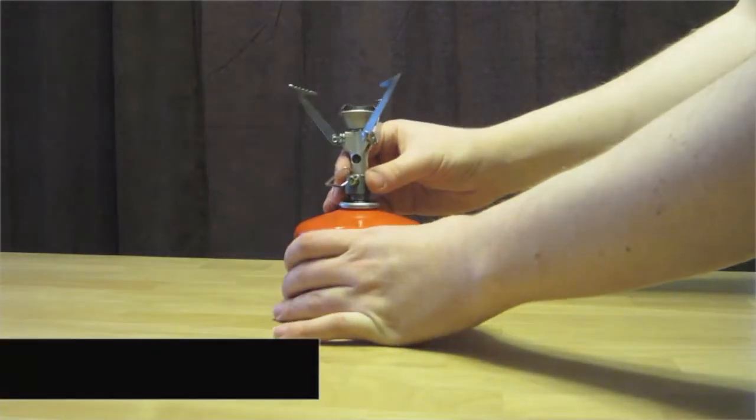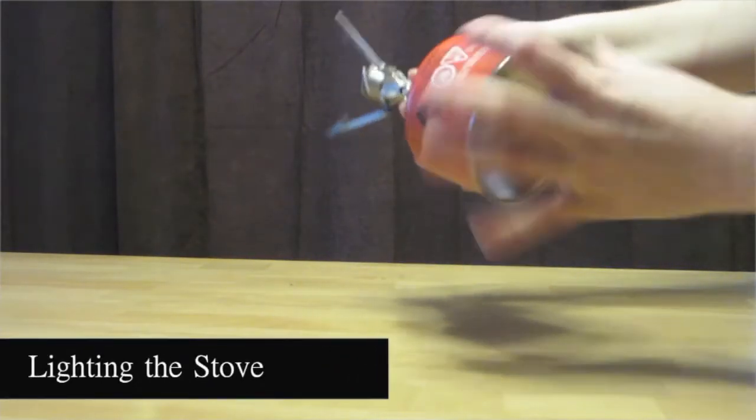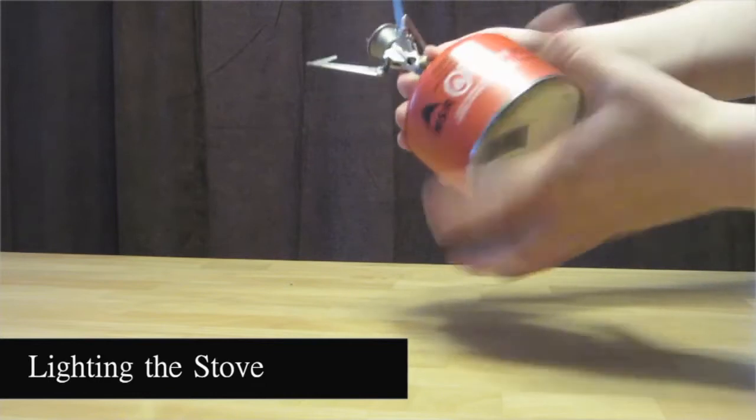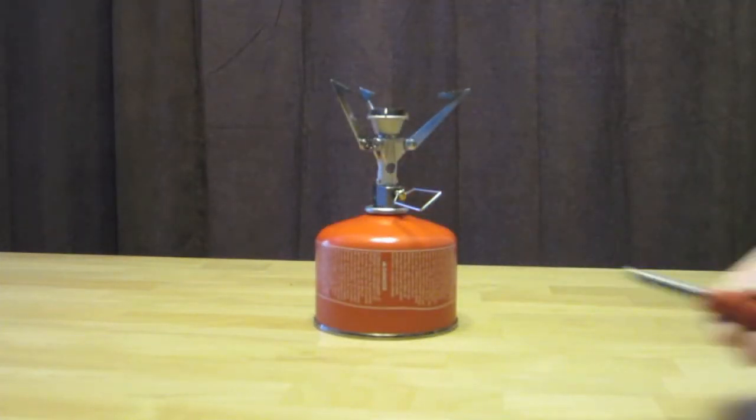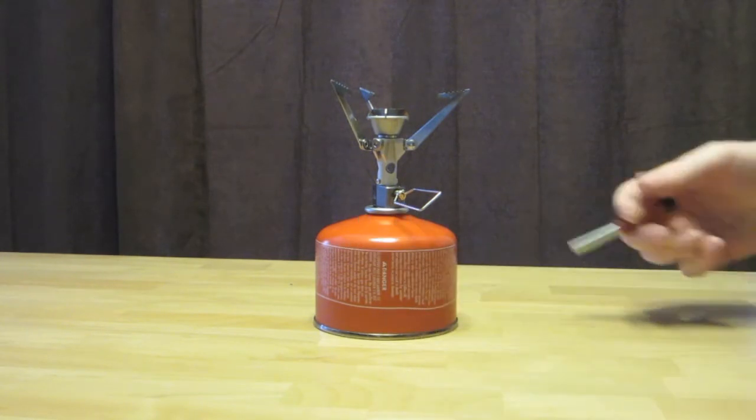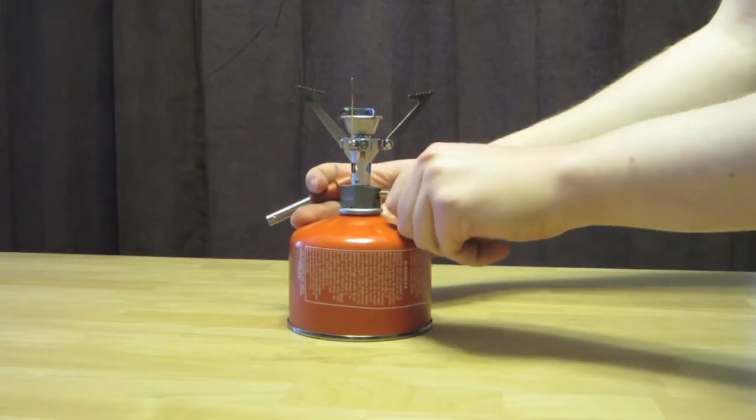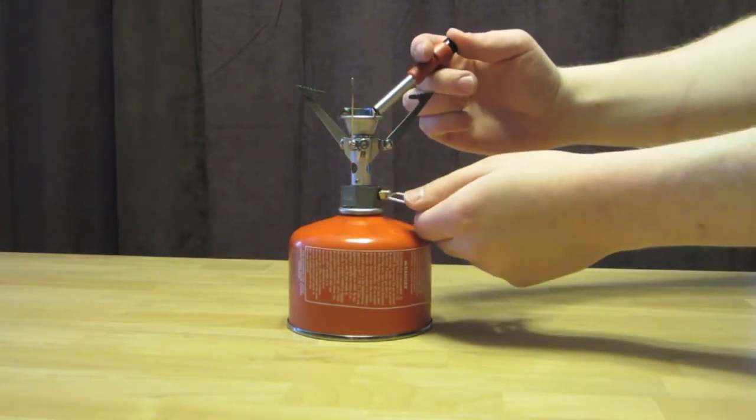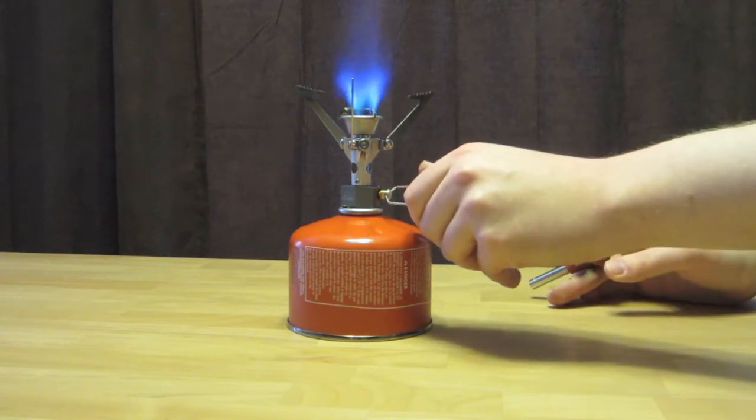So to light the MSR micro rocket all you have to do is twist it onto any isopro fuel canister. Make sure that the fuel knob is turned all the way off so that it's not spewing out fuel. You take your piezo igniter here and you just turn on the fuel and then make sure you get some fuel caught in there.